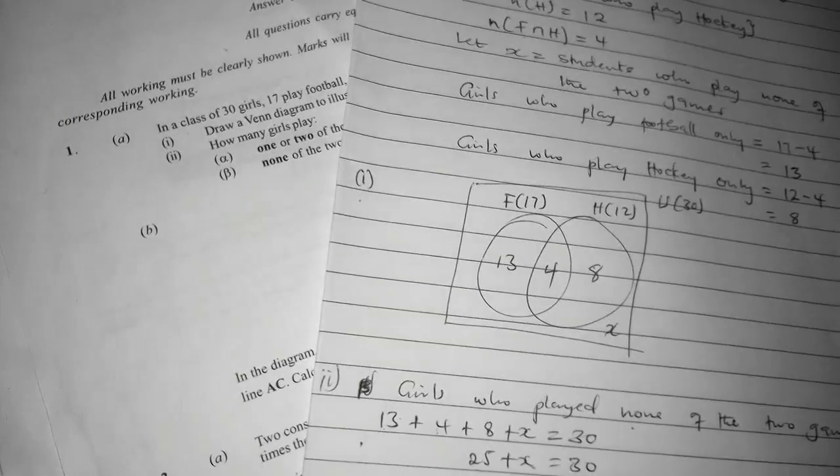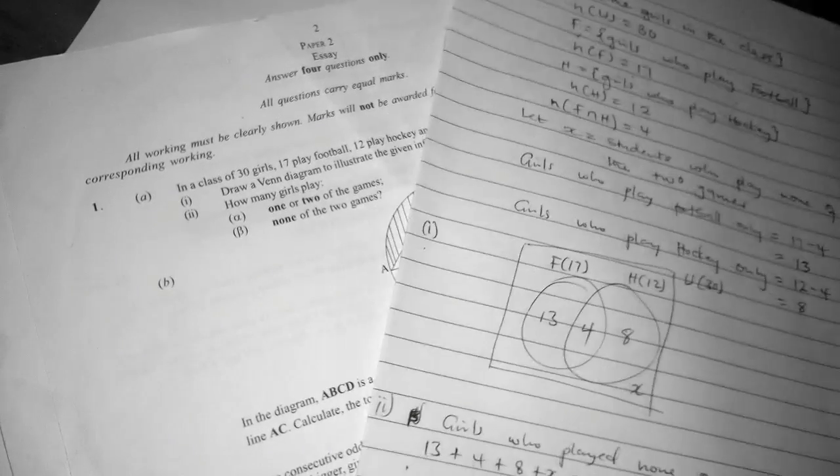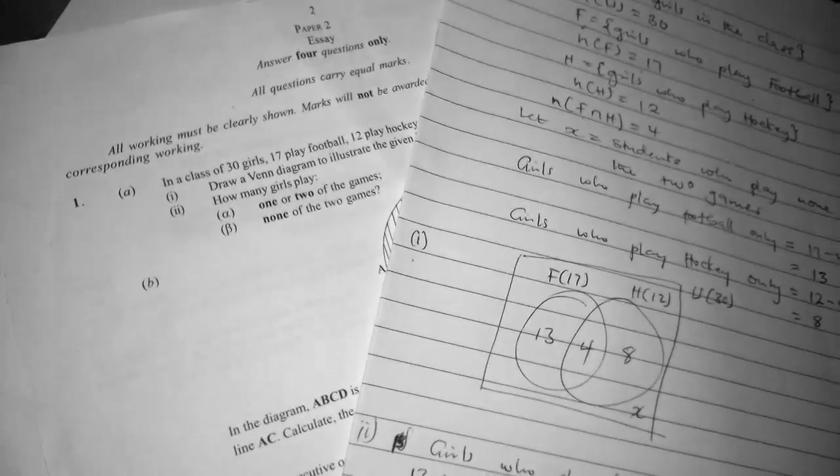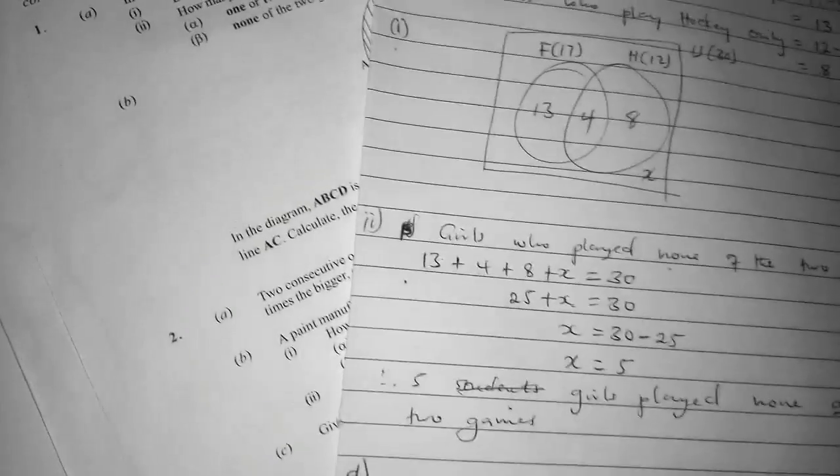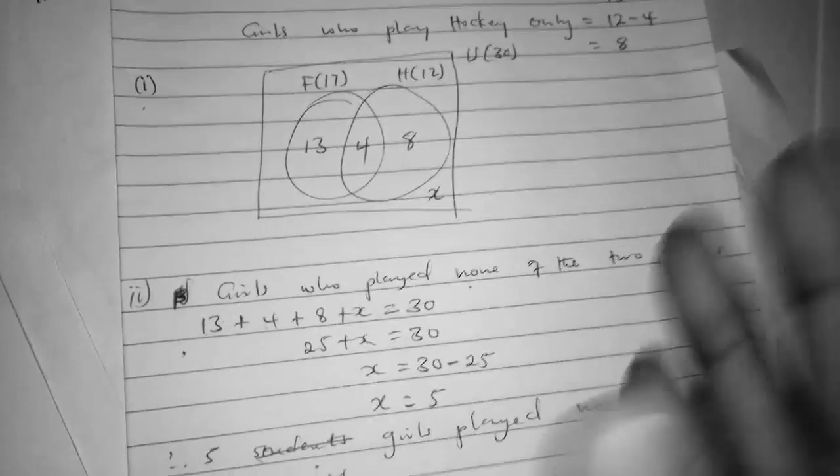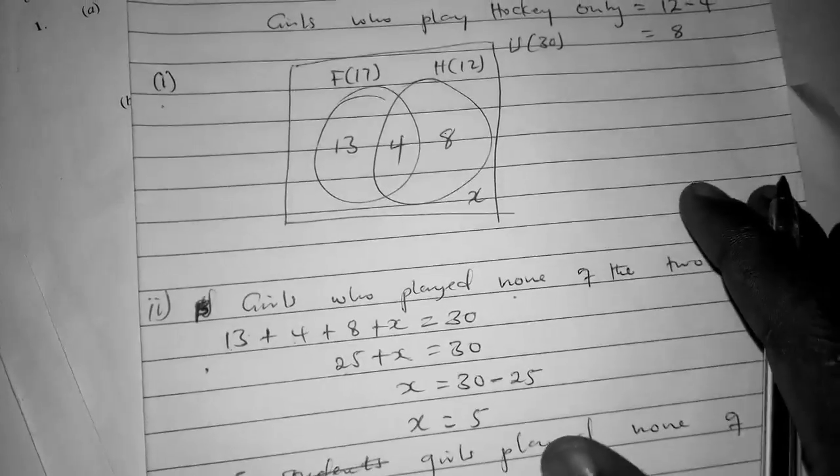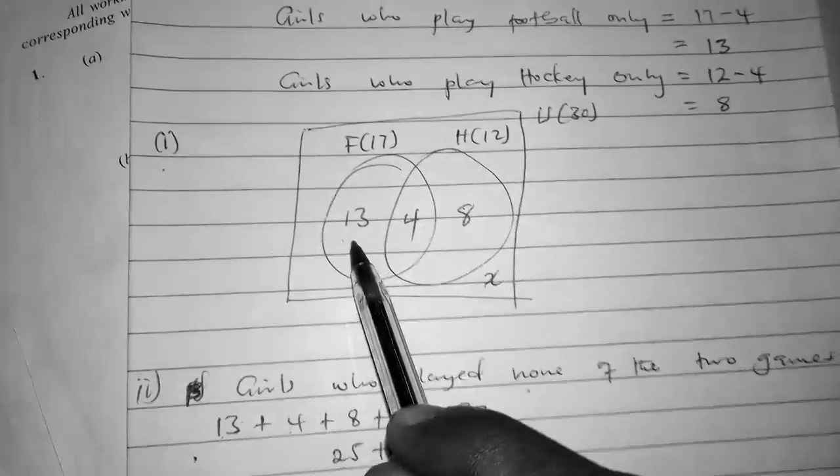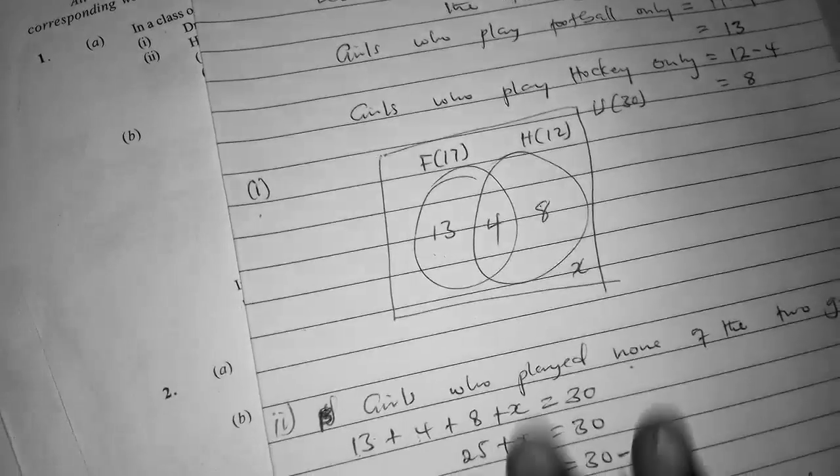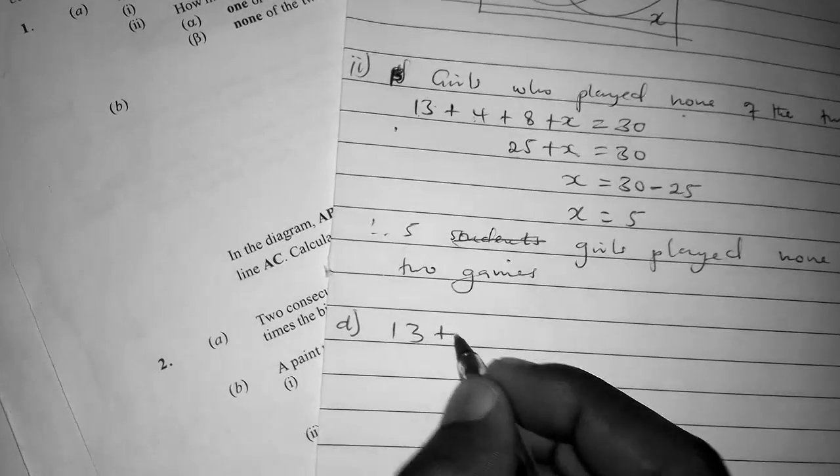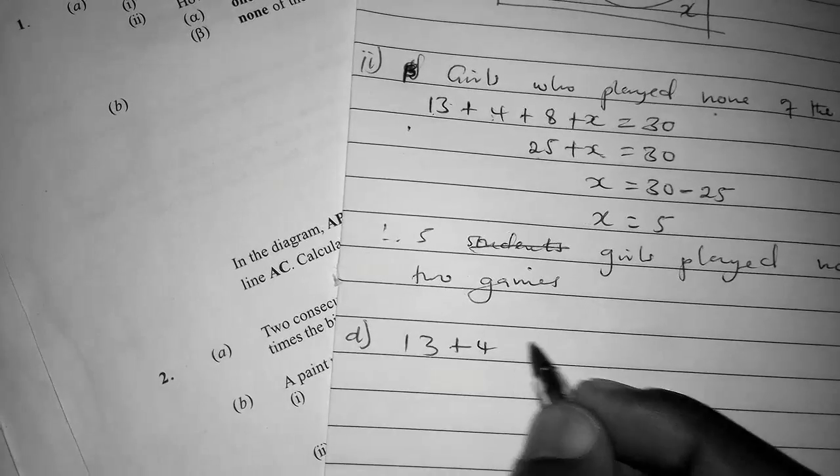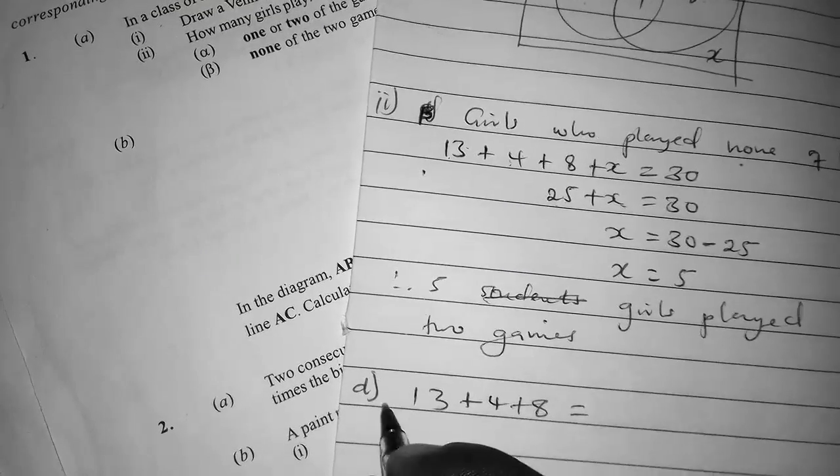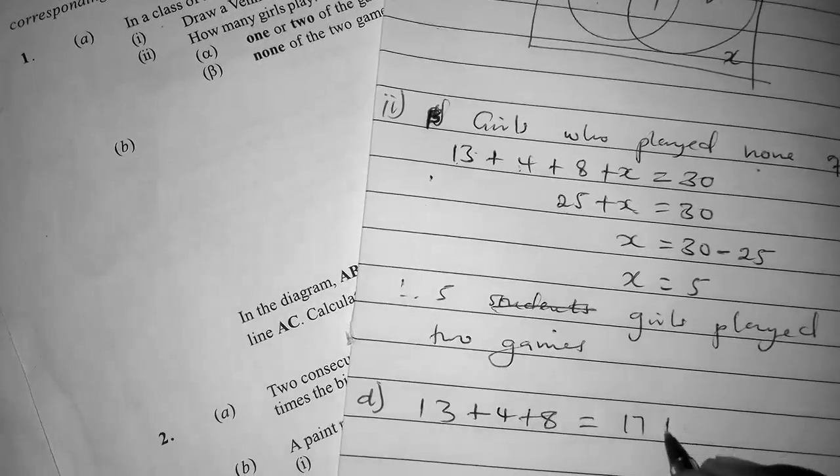We're finding how many girls played one or two games. Those who take part in activities are in the circles, so you sum up these three regions: 13 + 4 + 8 = 25.